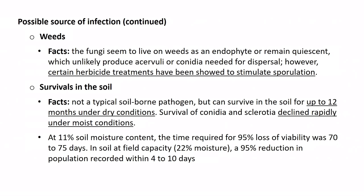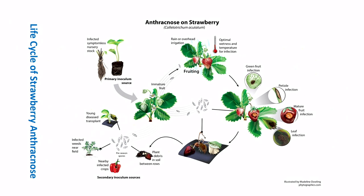Regarding survival in the soil — it's typically not a soil-borne pathogen, but studies have shown it could survive in soil for quite some time, especially under drier conditions. Putting together the life cycle: transplants are considered the primary source of inoculum, and under optimal weather conditions the disease starts to show up, produces spores, and causes more infections during the same season. Nearby weeds hosting the pathogen, as well as other crops such as peppers — which also have anthracnose caused by the same pathogen — could also serve as inoculum for strawberries.